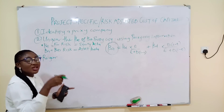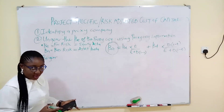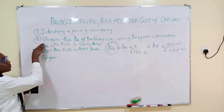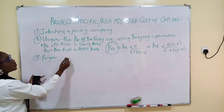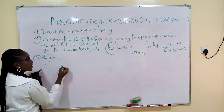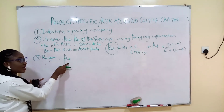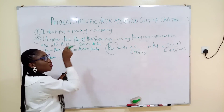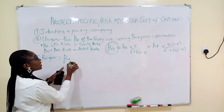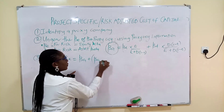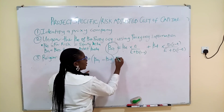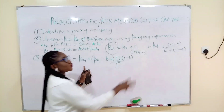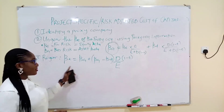Now you take that asset beta to step three — you regear. Regearing means putting the debt elements back in, but using the debt element of your own company — the company of concern. The proxy company is only used to get the business risk. So you regear using the company of concern's information. The formula to regear is: βe = βa + (βa − βd) × (D/E) × (1 − tax rate).